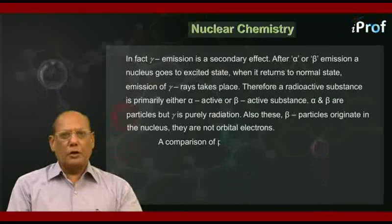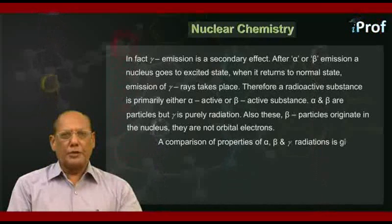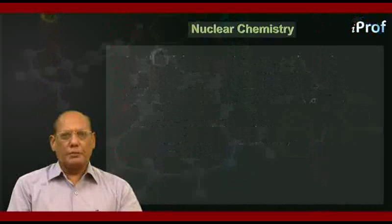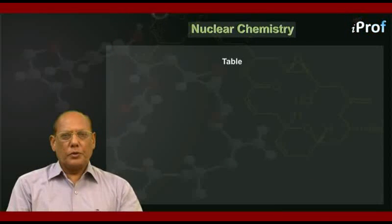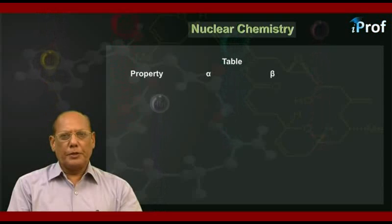A comparison of properties of alpha, beta, and gamma radiations is given in the following table. Here is a table consisting of four columns: first column deals with property, second column for alpha, third for beta, and fourth is for gamma particles or radiations.